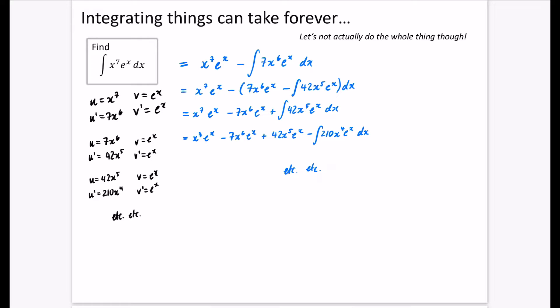We should know something with integration by parts: every time you do it, the polynomial part gets its power reduced each time. So it went from x to the power of 7, to x to the power of 6 in this integral, x to the power of 5 in the next, x to the power of 4 in the next — so you get a sense of how many times you'd need to do this. Some of you may have come across a YouTuber who does the DI method — the differentiate-integrate method for integration by parts.